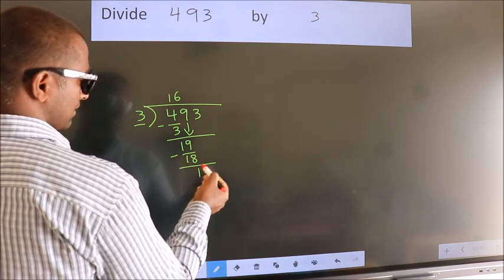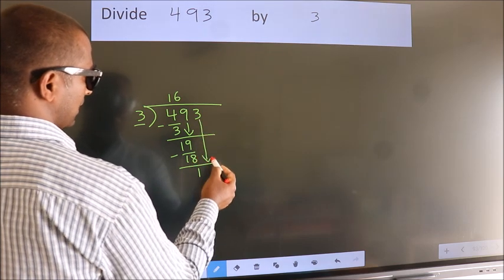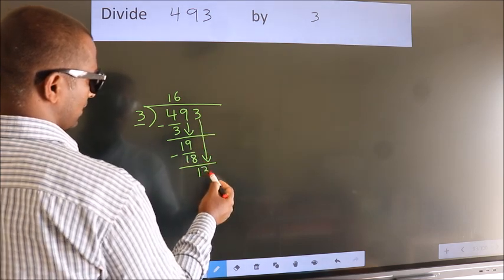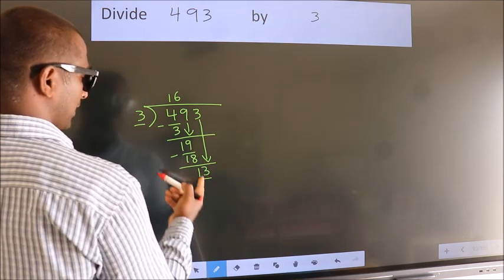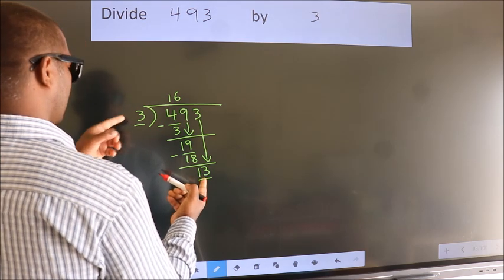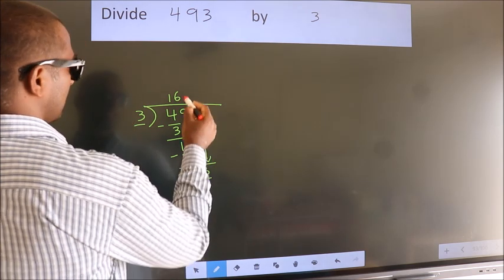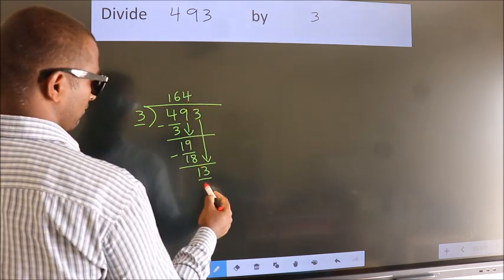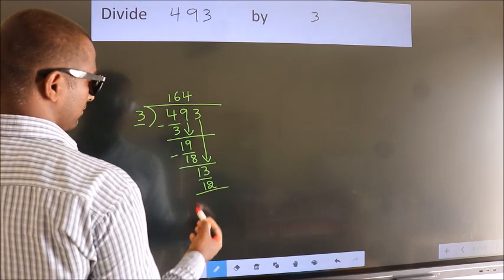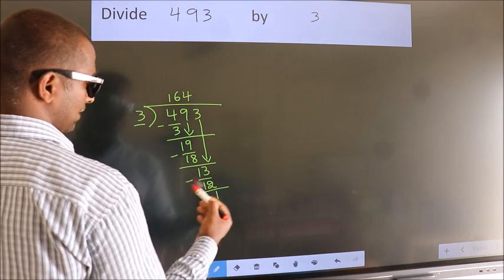After this, bring down the beside number. So 3 down, making 13. A number close to 13 in the 3 table is 3 4s 12. Now we subtract and get 1.